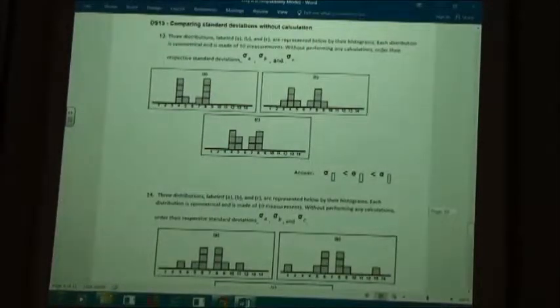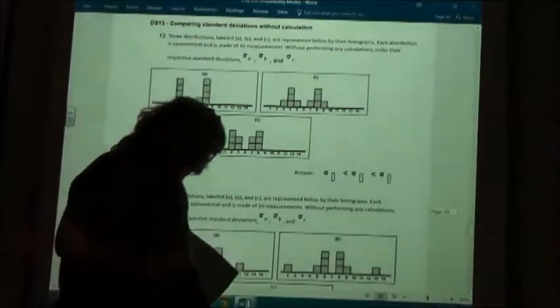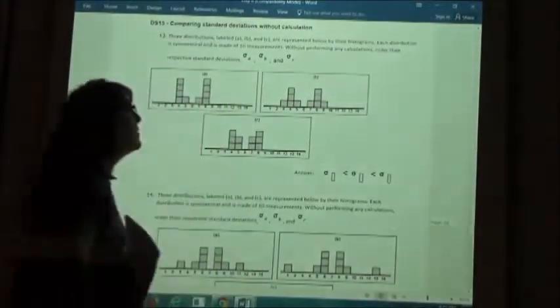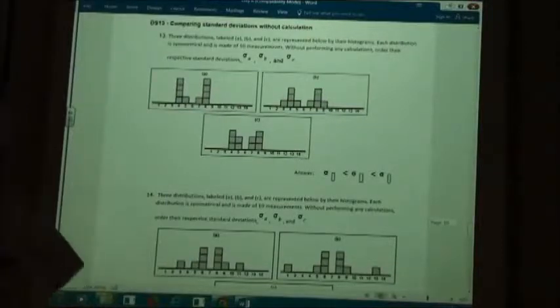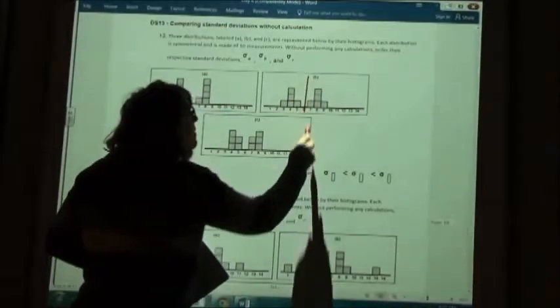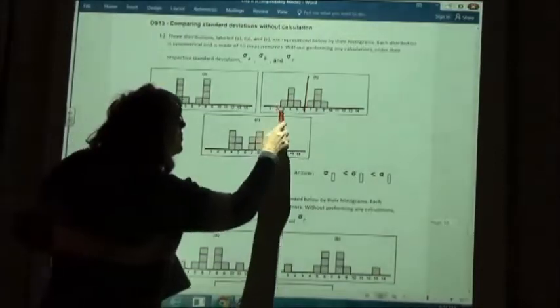So if I look at those three things, which one has the values that are farthest from the middle? I always, for some reason, like to work my way backwards. B would be farthest from the middle. My middle would be here at 6. This one goes from 3 to 9.